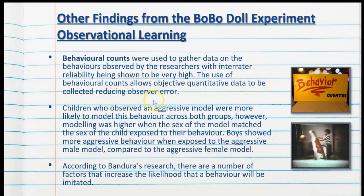Children who observed an aggressive model were more likely to model this behaviour. However, modelling was higher when the sex of the model matched the sex of the child exposed to their behaviour. Boys showed more aggressive behaviour when exposed to the aggressive male model compared to the aggressive female model in particular.